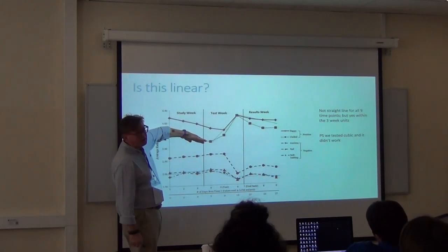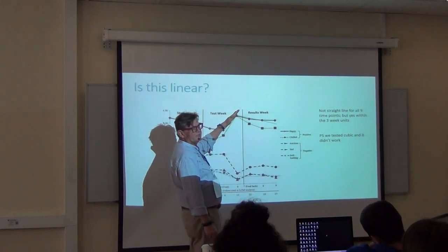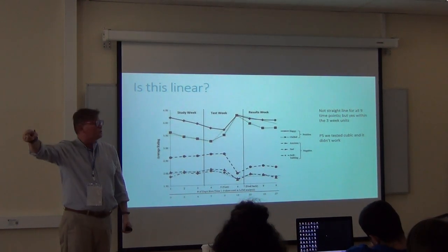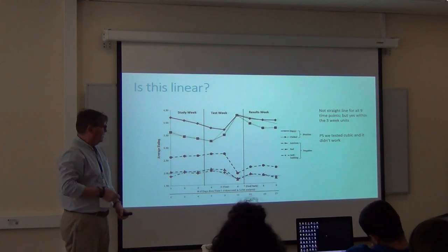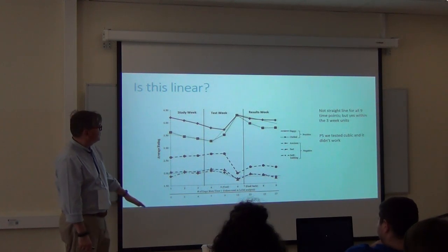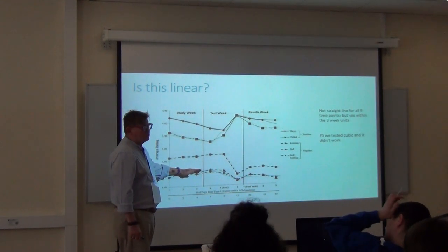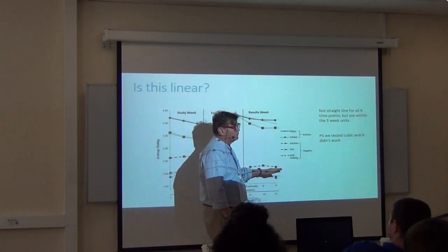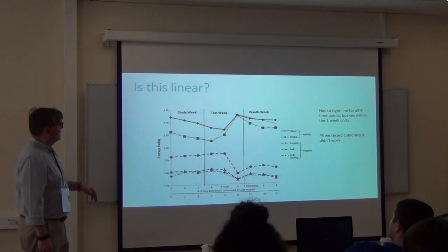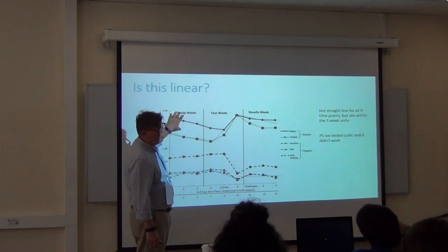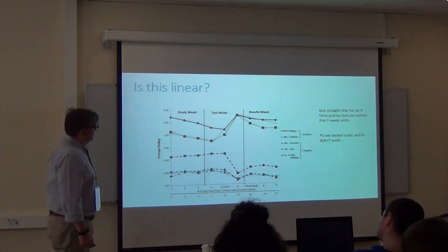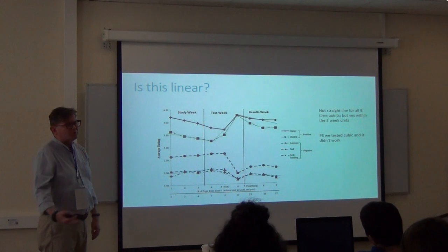And everybody's head should go, no way, look at this. This might be a line, this might be a line, this might be a line, but it's a very unusual curve to try and model. And believe me, we tried quadratic, we tried cubic. In the end we went, what if it's just a line for week one, a line for week two, and a line for week three. That's what we published in this study. We published a latent curve model that said, how did these emotions behave in week one, week two, week three.